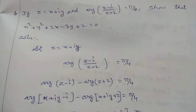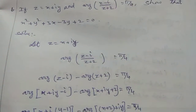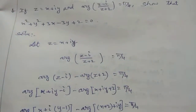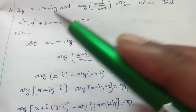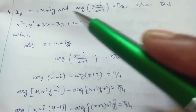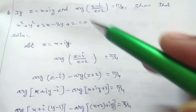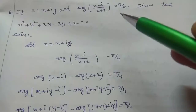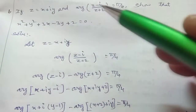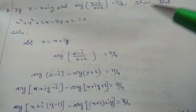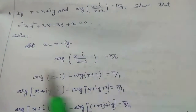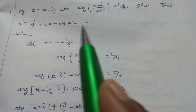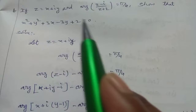x is 2.7, sum number 6. If z equals x plus iy, condition: argument of (z minus i) divided by (z plus 2) equals π/4. So in the end we have to show that x squared plus y squared plus 3x minus 3y plus 2 equals 0.